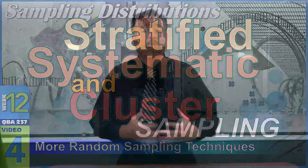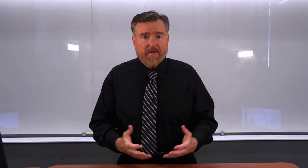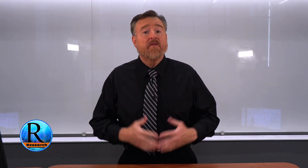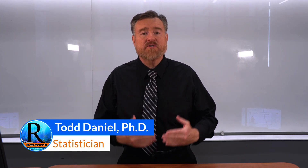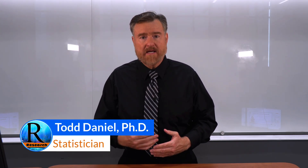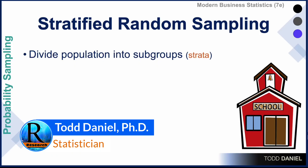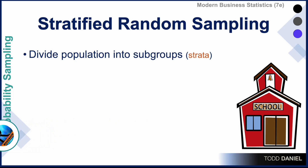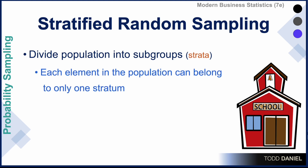In addition to simple random sampling, another random sampling technique is stratified random sampling. In stratified random sampling, we divide our population into subgroups, which are called strata. Each element in the population could belong to one and only one stratum.